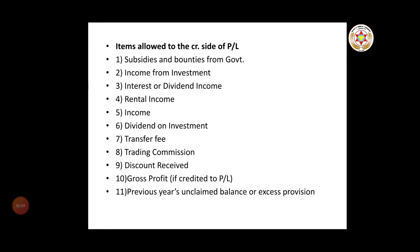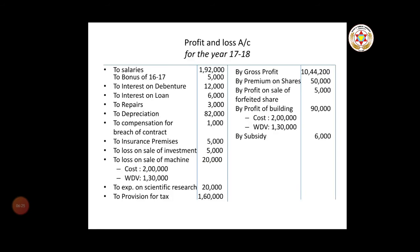Items that are allowed to the credit side of P&L include: subsidies and bounties from government, income from investment, interest or dividend income, rental income, dividend on investment, transfer fee, trading commission, discount received, gross profit if credited to P&L, and previously unclaimed balance or excess provision.